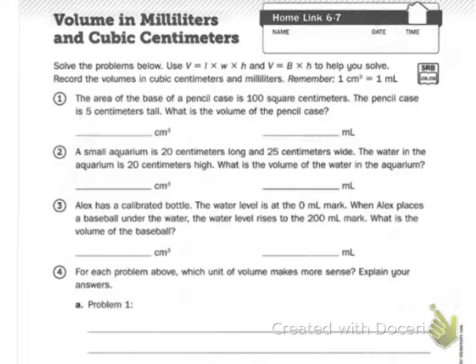So I'm going to use volume equals base times height because right here it says base. The base of the pencil is 100 square centimeters and it's 5 centimeters tall. So I know I'm going to do volume equals 100 centimeters squared times 5 centimeters. 1 times 5 is 5, and then I'm going to add my two zeros, so it's 500 centimeters cubed.